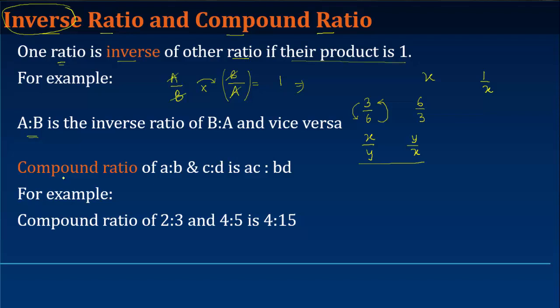Second is the compound ratio. Now, you might just have a situation where there are two ratios given to you. So let's say you have A upon B, which is A is to B, and C is to D, written as C upon D.